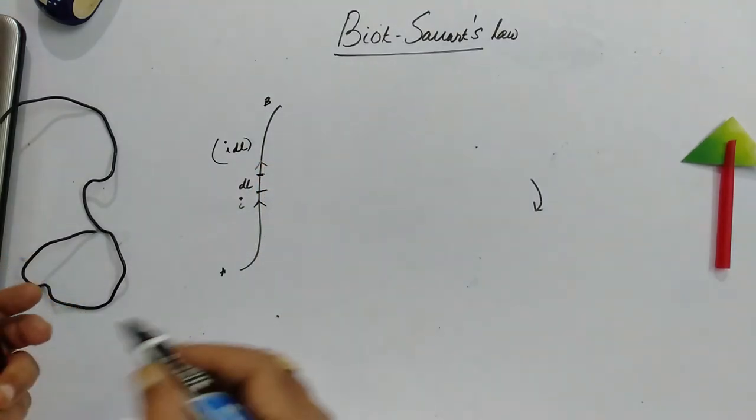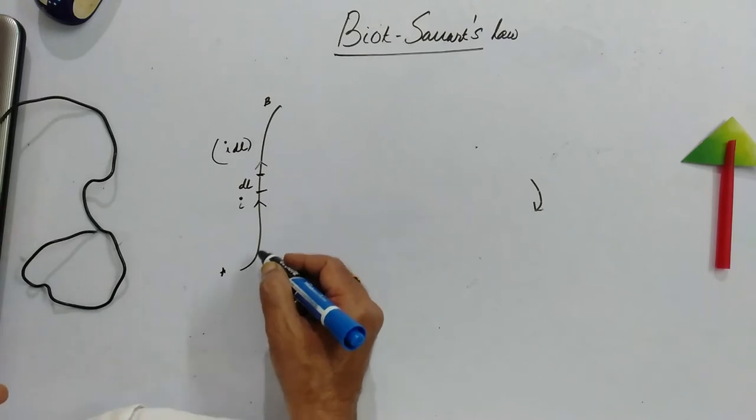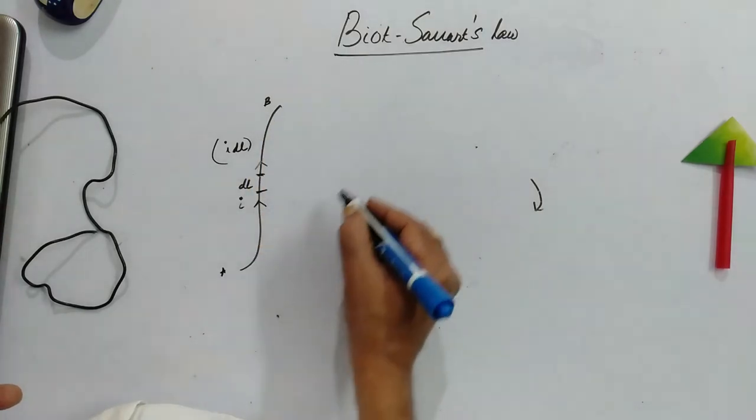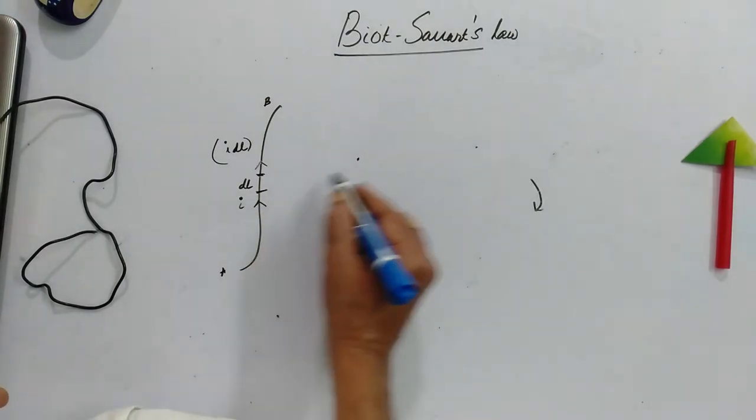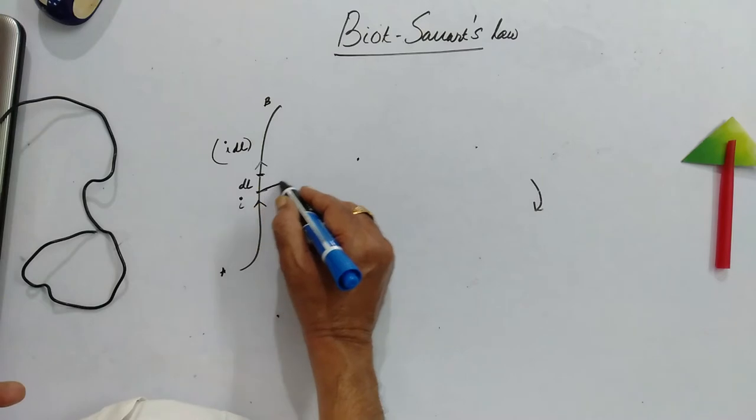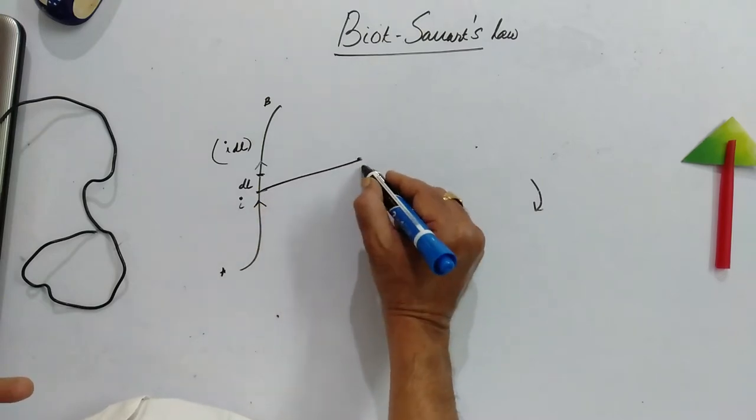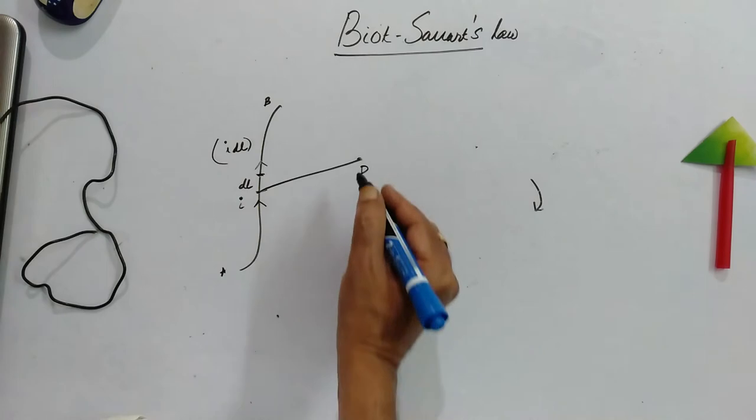Now when if you allow the current through this one and if you place any compass needle here, it shows the deflection. So let P be our point of observation.